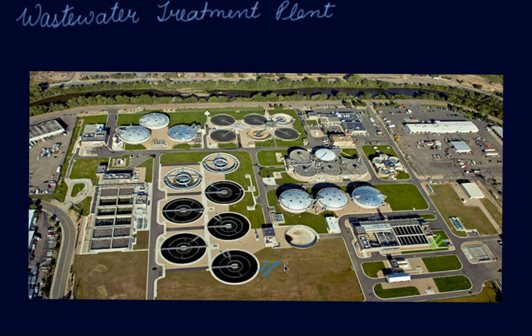After this, the wastewater passes into the sedimentation tanks, also called clarifiers, in which organic material settles down and is removed with scrapers. This settled material is called sludge. Floating material like oil and grease is also removed in this process. The sludge is then used to obtain methane, carbon dioxide, and a humus-like material by a process called digestion.